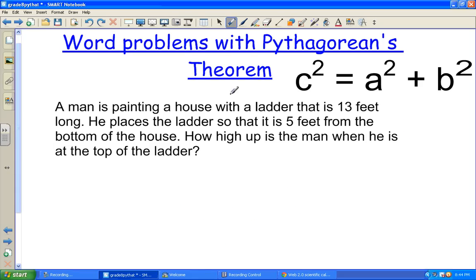In word problems with Pythagorean's theorem, sometimes the hardest thing to realize is that the items they're giving you will make some sort of a triangle. A right triangle, hopefully.